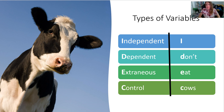There are four main types of variables or categories. Independent and dependent are the classic ones that people learn about the most, but there's also extraneous and control. I'm a big believer in working smarter, so instead of just rote memorization, I encourage you to find an acronym that works for you. For this video, we're going to use 'I Don't Eat Cows' to remember independent, dependent, extraneous, and control.